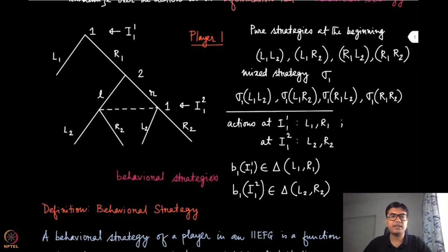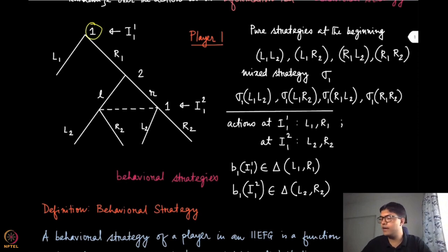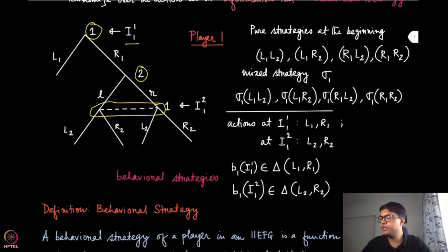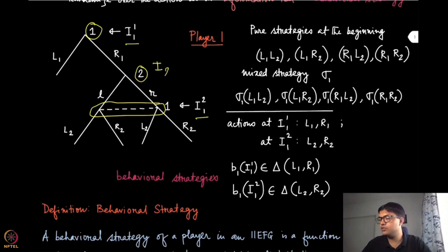So here we have two players. Player one is playing at the root and also at this information set, which is at the third level, and in between player two makes another move. We are going to denote the first information set, which is a single turn for player one, with i11, and the second information set as i12. Similarly, player two has only one information set, which can be represented as i21.